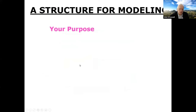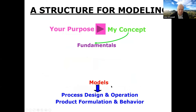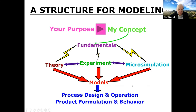What's the structure for modeling? If you have a purpose — such as process design, operation, or product formulation — you're going to use models. My concept is that you start with fundamentals like the laws of thermodynamics, which are always true. The tools are theory, experiment, and what I call microsimulation — molecular simulation and quantum chemistry calculations. These lead to models. I'd like to describe some justification of this structure and show examples of how I've implemented it.